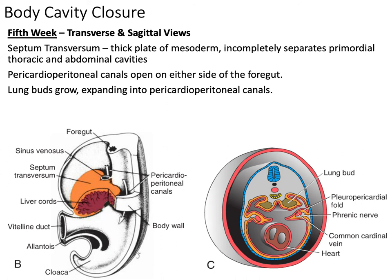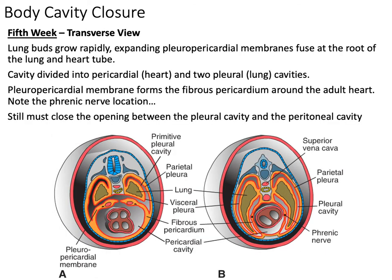In the fifth week we have body cavity closure. Our septum transversum is a part of mesoderm; it's not completely separating the primordial thoracic and abdominal cavities — it's kind of a placeholder waiting for other structures to form. In picture B you can see the septum transversum in orange, along with the beginning liver cords developing. We also start to have structures of our thoracic cavity form — you can see our heart and the lung buds beginning to grow, expanding into our pleuropericardial canals.